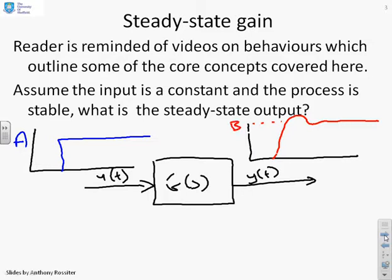The question we're asking when we're talking about steady state gain is, what's the relationship between B and A? What steady state output do I get given a certain steady state input U?